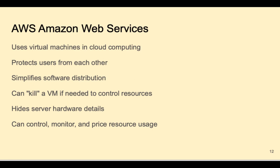Amazon Web Services uses virtual machines in the cloud, enabling them to protect users from each other. For the user, it simplifies software distribution and helps applications scale up or down as needed. For Amazon, the advantage is that they can kill a virtual machine if needed to control resources, and they can monitor, control, and price based on usage. Another advantage for the user is that it hides the server hardware details.